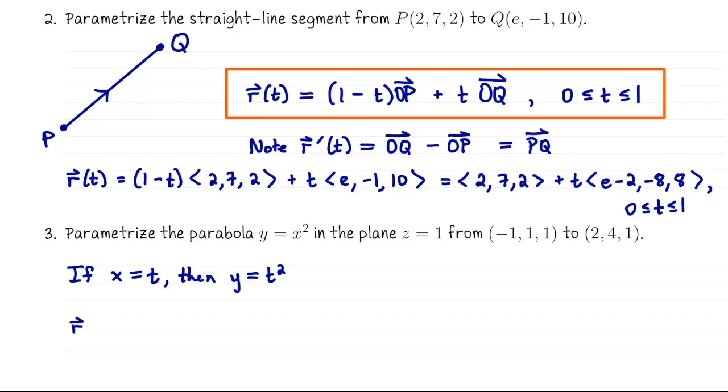So our parametrization is r of t is going to be t, t squared, 1. And then we do have a subset of t values here. We want to start when x is negative 1, so that's going to be like t starts at negative 1. And then we're going to end when x is 2, so t would go up to 2.